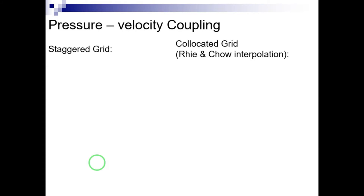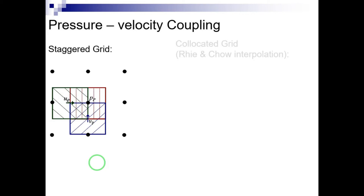Let's first talk about the staggered grid. One remedy to eliminate non-physical fluctuations in velocity and pressure fields is using a staggered grid. In the two-dimensional staggered grid shown here, the pressure is stored in the center of the main control volume, while the velocity components are stored in the center of the displaced or staggered control volumes — which are in fact the surfaces of the main control volume. Scalar quantities such as enthalpy, temperature, density, and transport coefficients are also stored at the center of the main control volume.